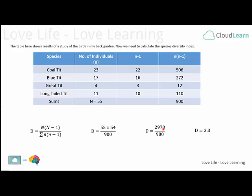Finally, we divide 2970 by 900 and that gives us our species diversity of 3.3. Thank you for listening.